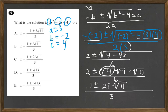And then we come over and look at our solution choices, and we see that 1 plus or minus 2i square root of 11 over 3 is C.